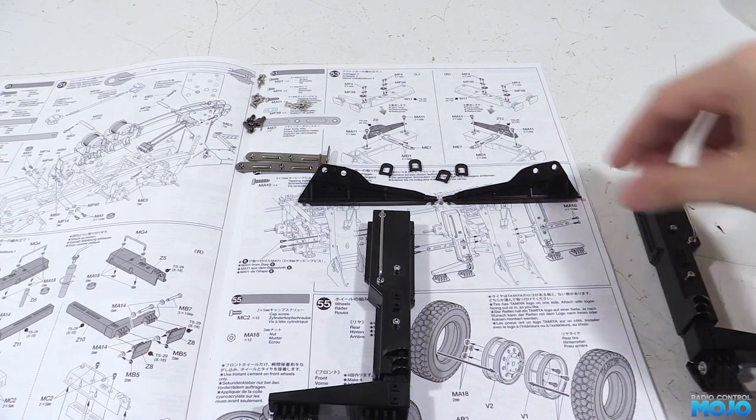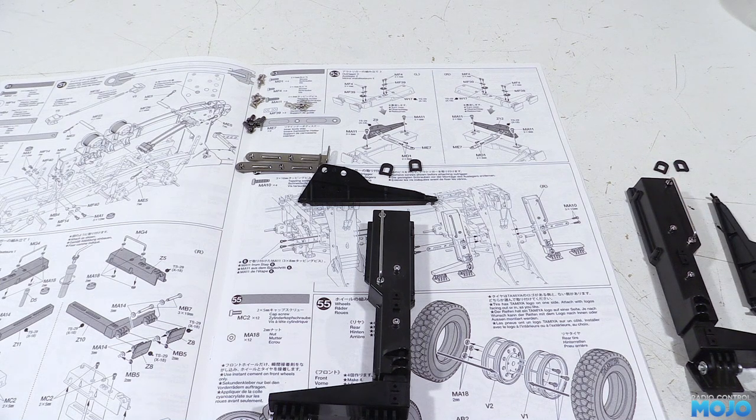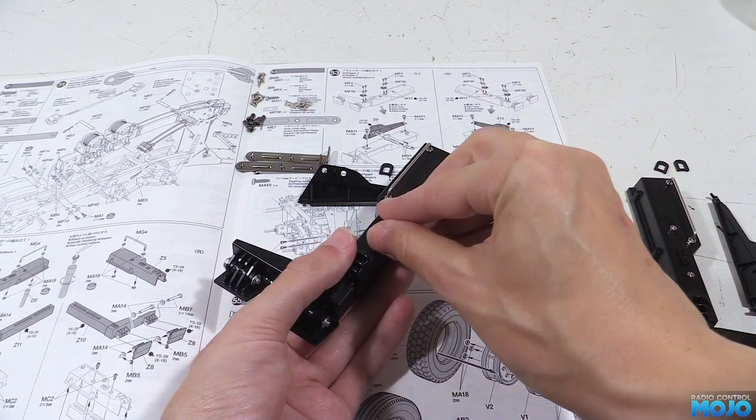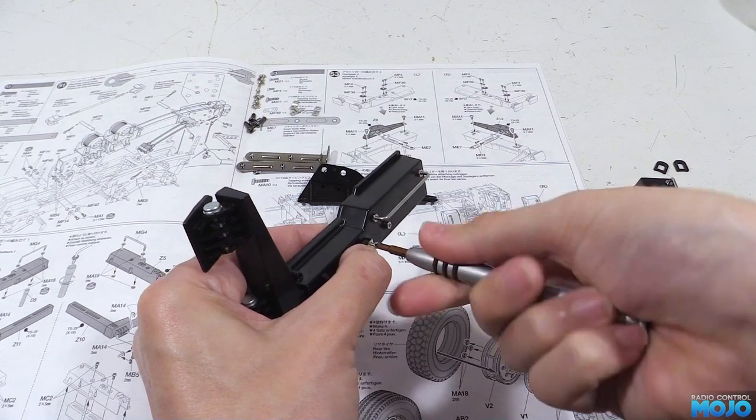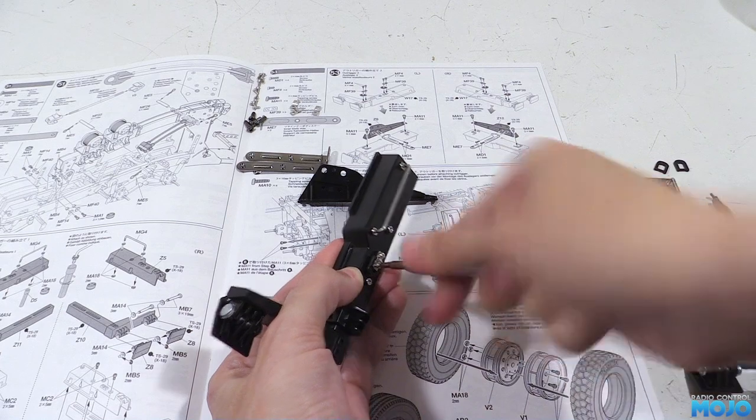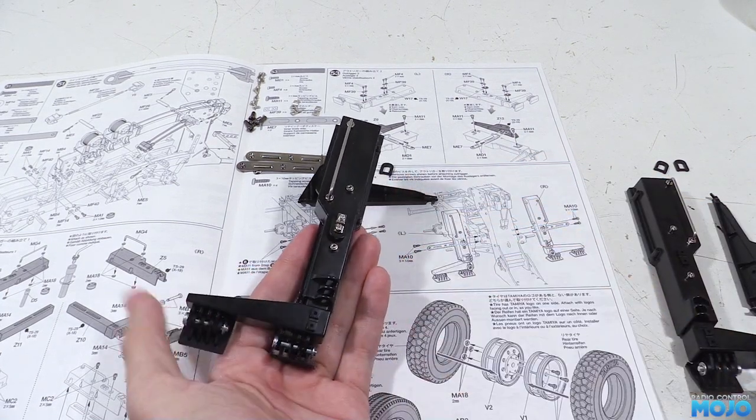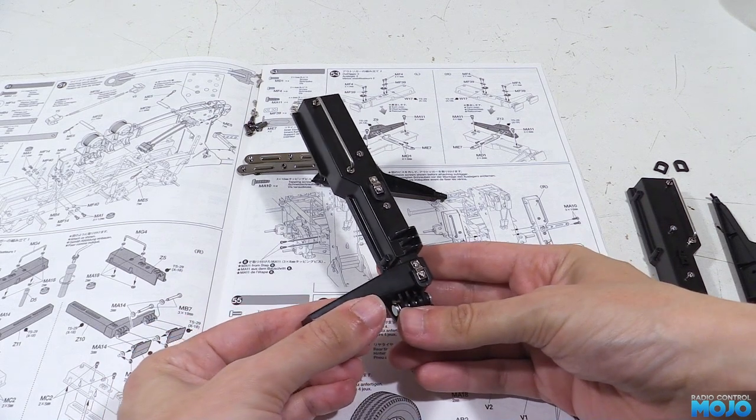Alright, shackles first then. Now we've already done a few of these so we should know what to do. It's just a case of sitting them in a slot, laying the strap on the top and screwing in the two M2x4s. Just watch out for over tightening them as it would be really easy to strip out the plastic. Repeat with the other one and that's the shackles done.